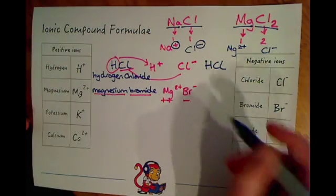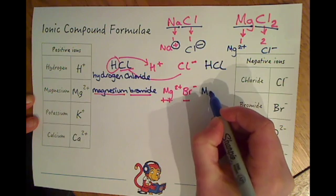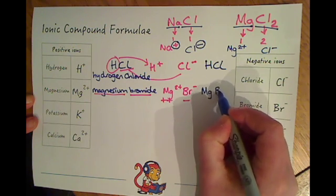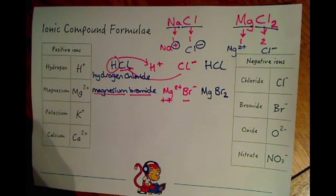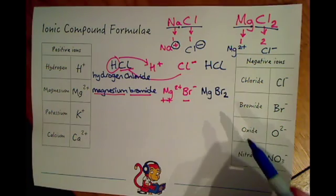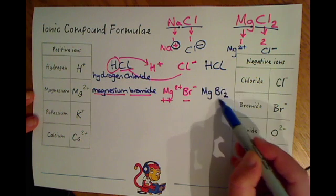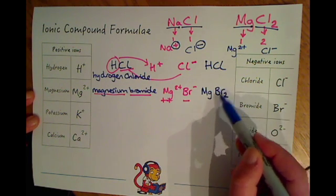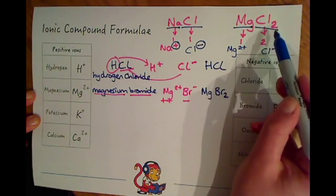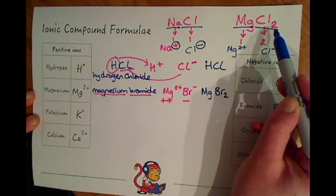So the formula will be Mg because we just need one of those and Br2. The important thing is that when you write these formulae you put the numbers in subscripts, that means just below, they don't go above, they go just below, hence the Br2 here and the MgCl2 over here.